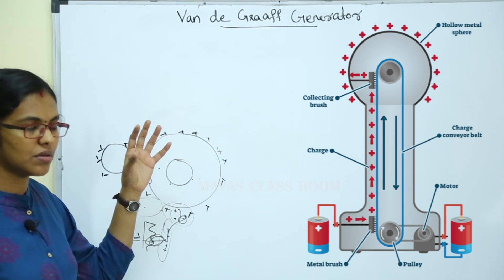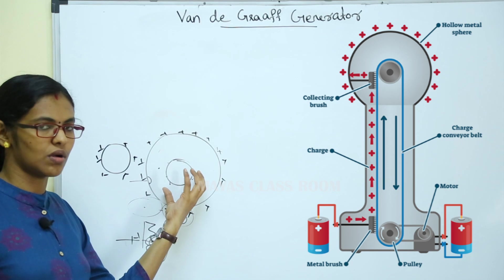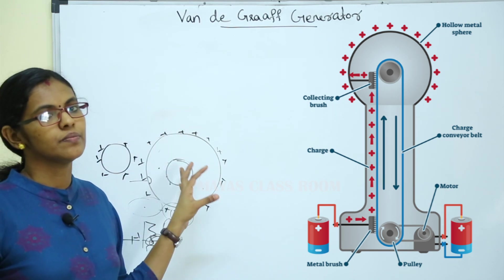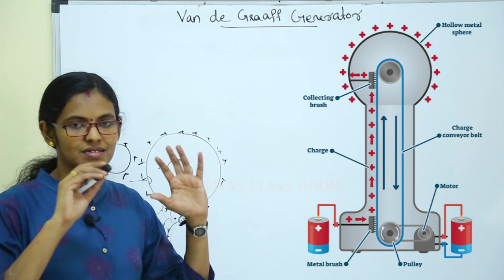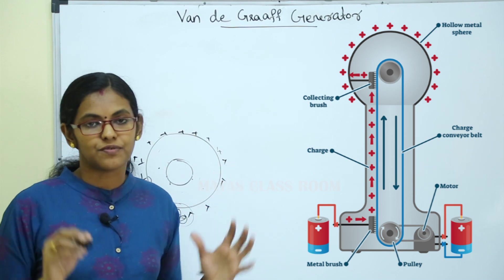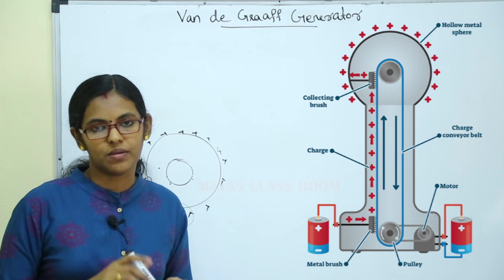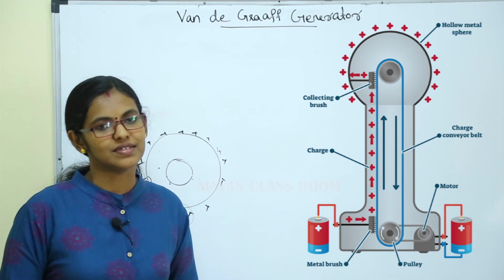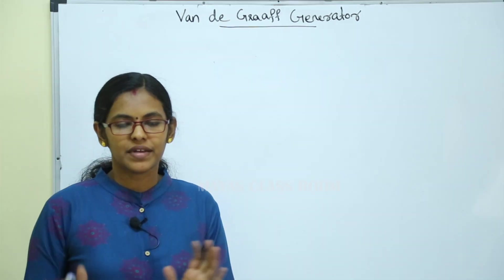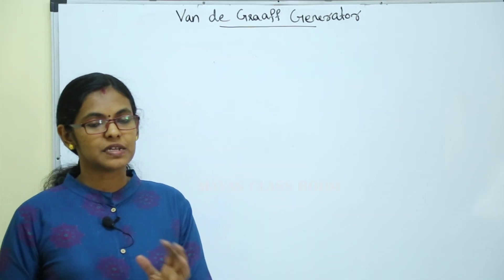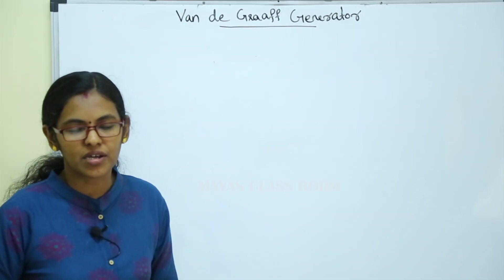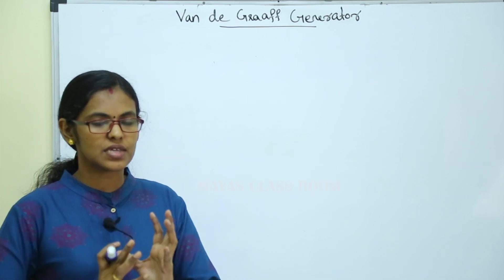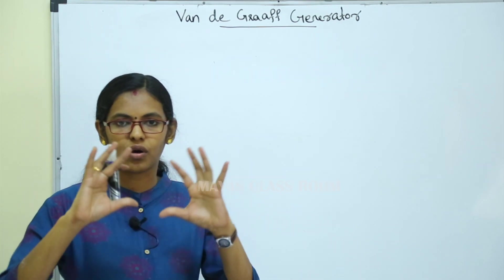If you take a charge inside a hollow conducting sphere, you can distribute the charge to the outer surface. This is the working of the Van de Graaff generator. The principle is that there is a charge inside a hollow sphere — the hollow sphere is a large sphere.